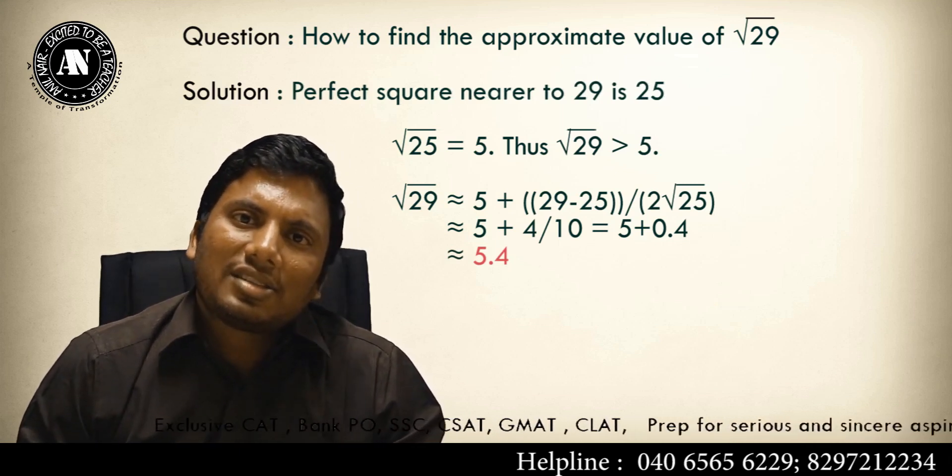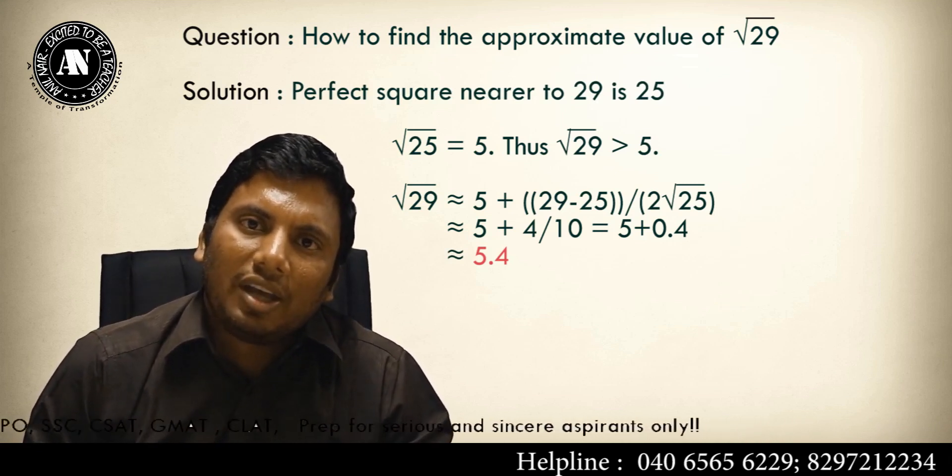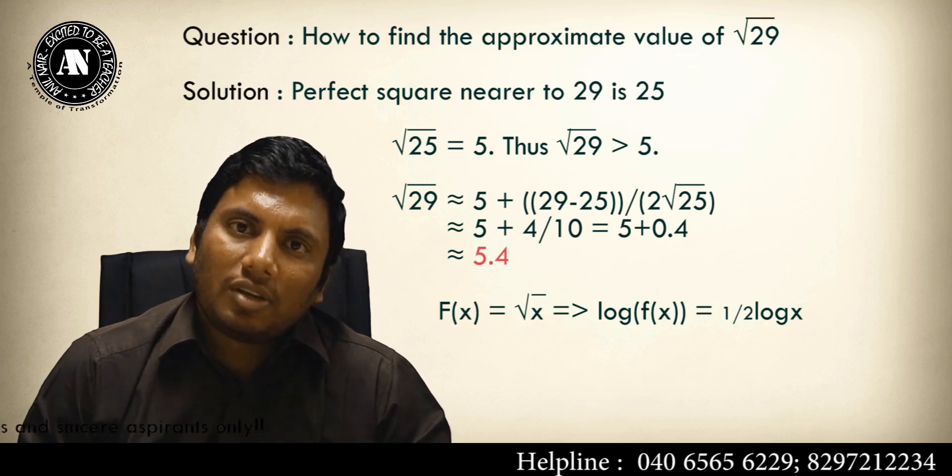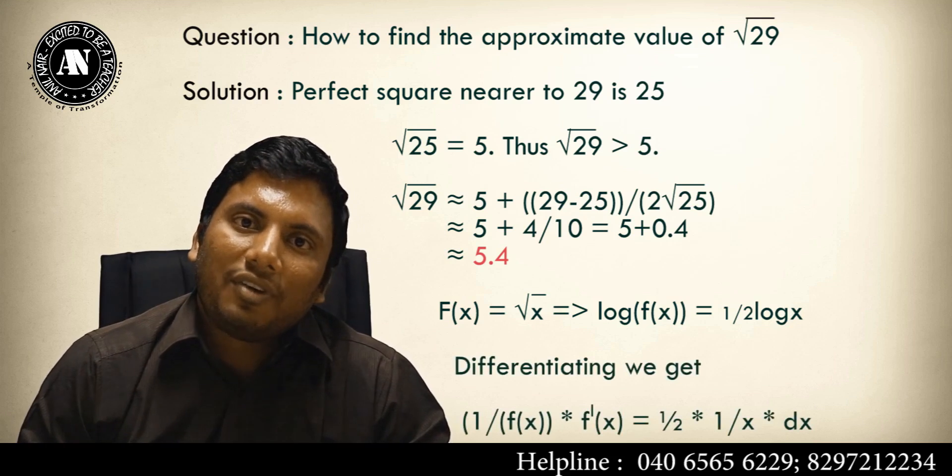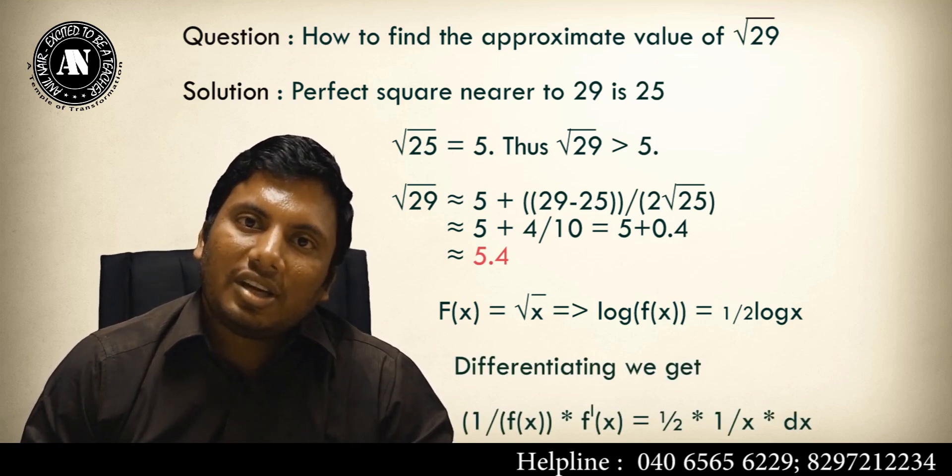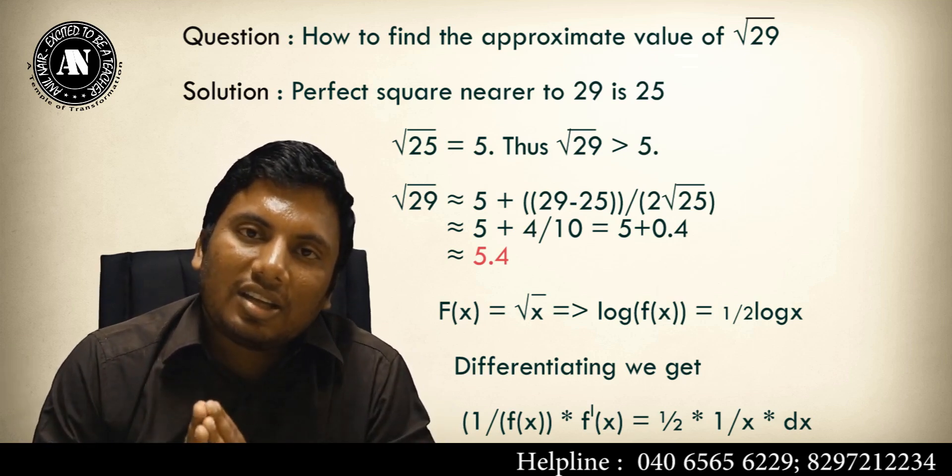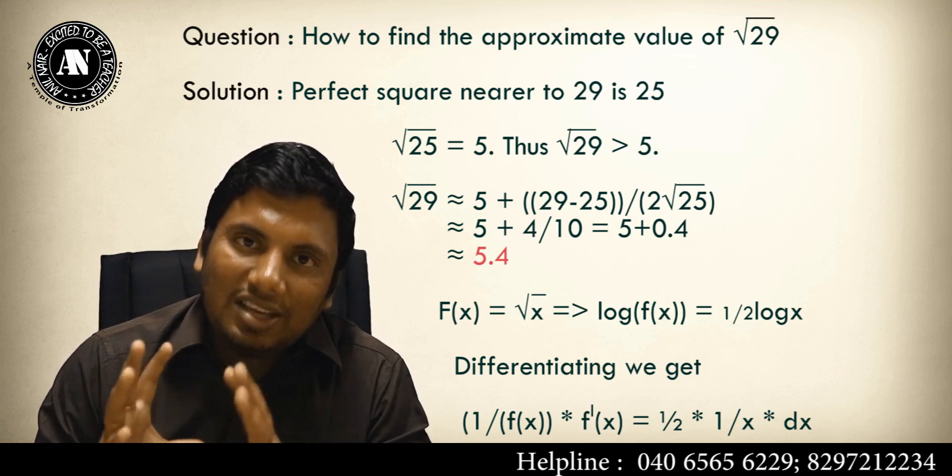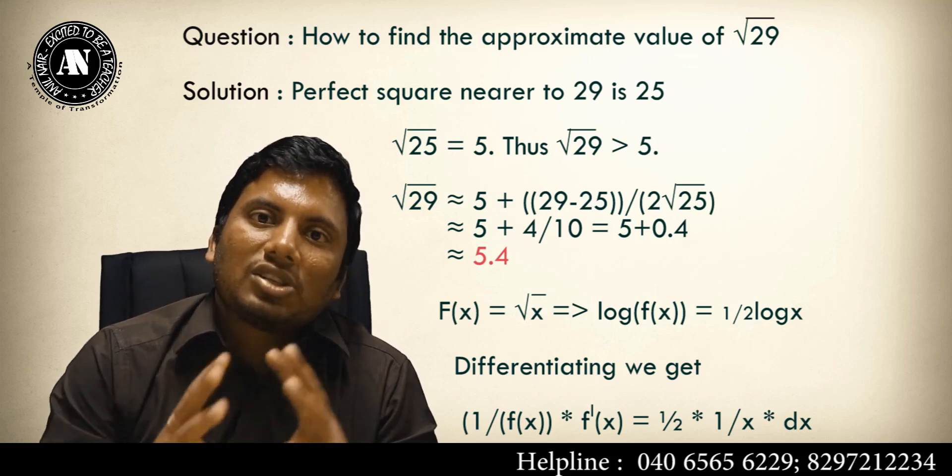Now you might be wondering, Anil sir, how did you get that logic of double and everything? Listen carefully. This is derived from differentiation. f(x) equivalent to root x, log f(x) equivalent to half log x. Log f(x) if I differentiate, 1 by f(x) into f dash x equivalent to half log x. What is the differentiating factor? 1 by 2 into log x is 1 by x into dx. This is the exact value which is added to a perfect square which is closer to the value.